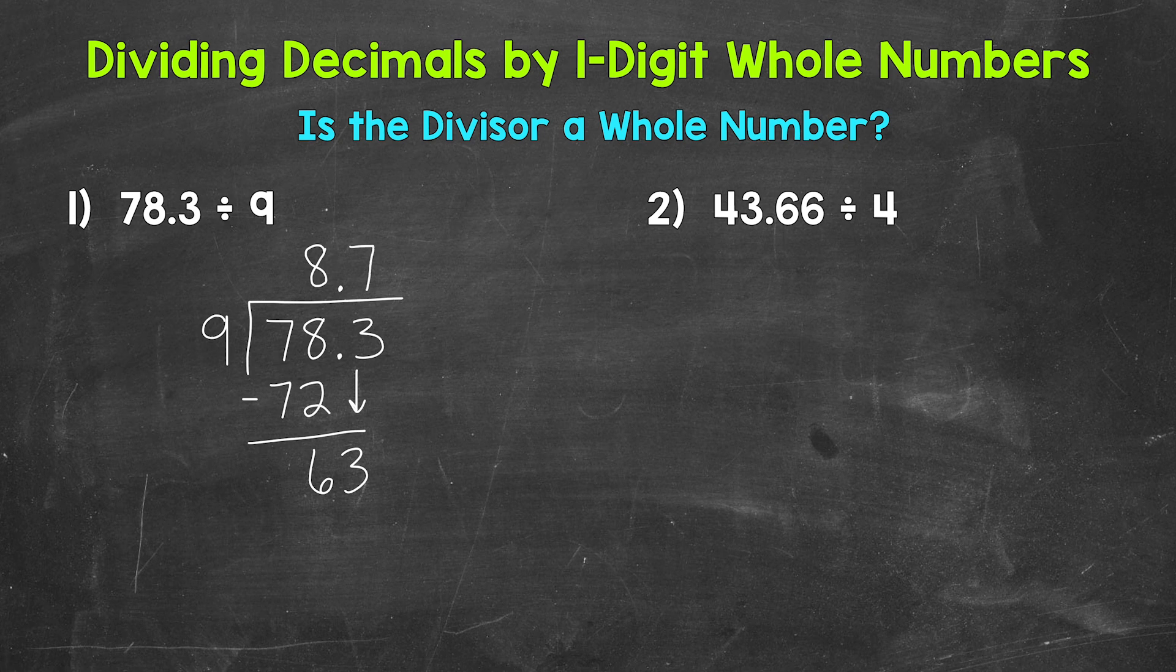And that hits 63 exactly. 7 times 9, 63, subtract, 63 minus 63 is 0. We went all the way over to the furthest place to the right, which was the tenths place for this problem. And we have a clean cut 0 here at the end. So we are done. 8.7.